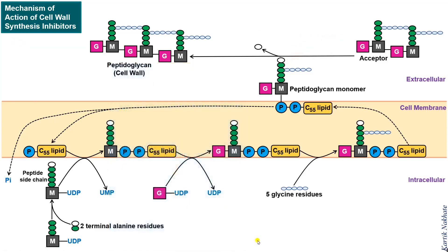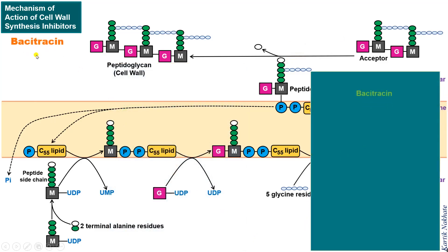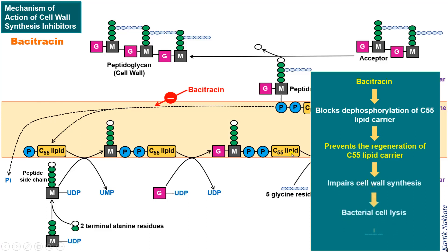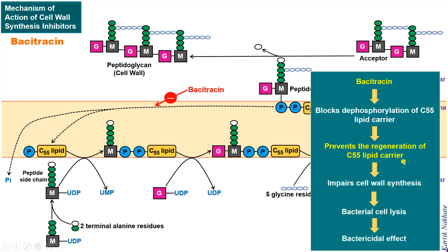The next antibiotic is bacitracin. Bacitracin blocks dephosphorylation of the C55 lipid carrier and thus prevents its regeneration. As a result, the C55 lipid carrier will not be available for another cycle of building block synthesis and transportation. This ultimately results in the formation of a cell wall deficient bacterial cell.